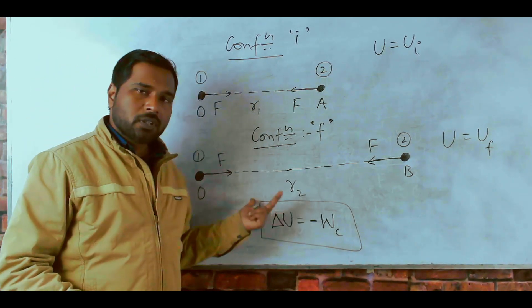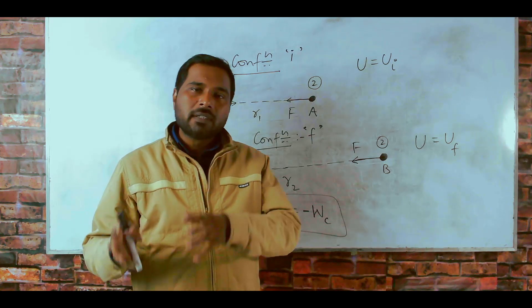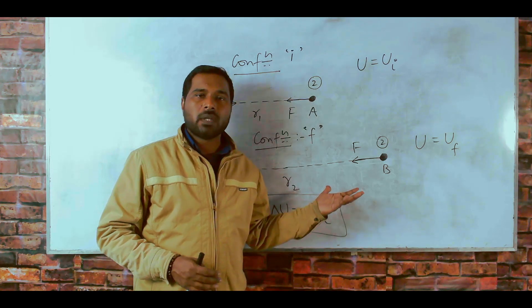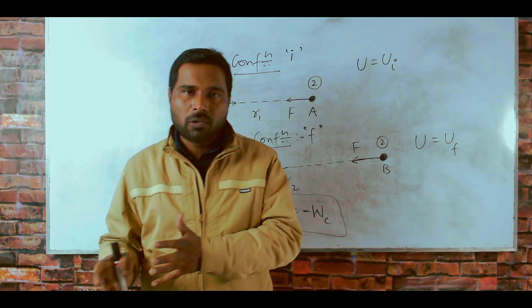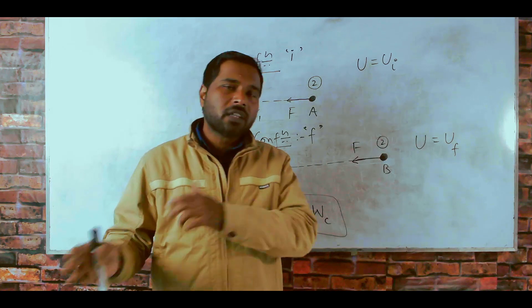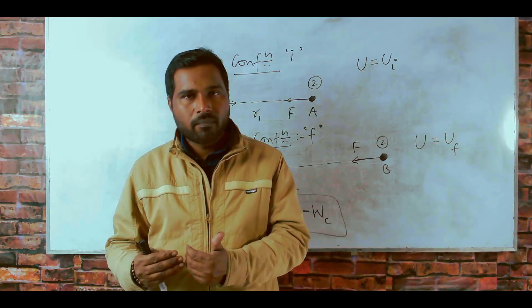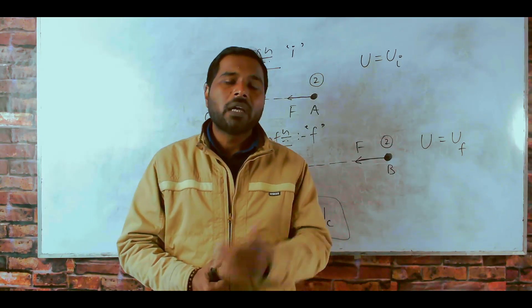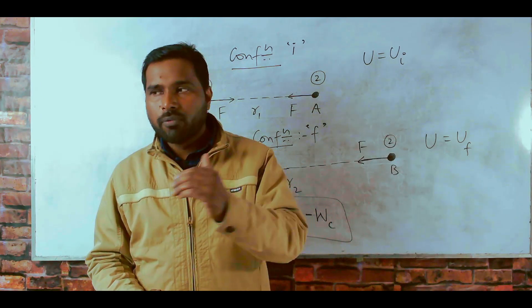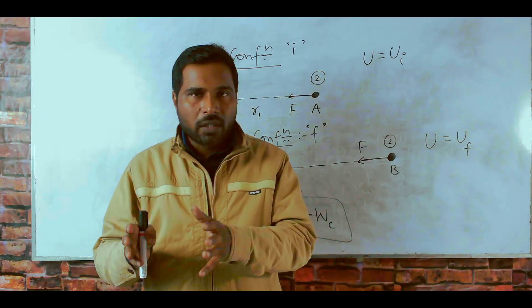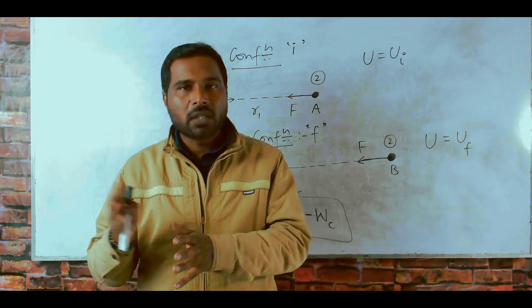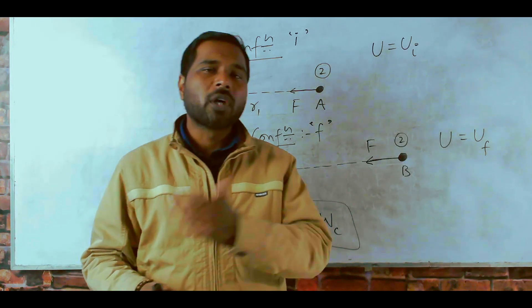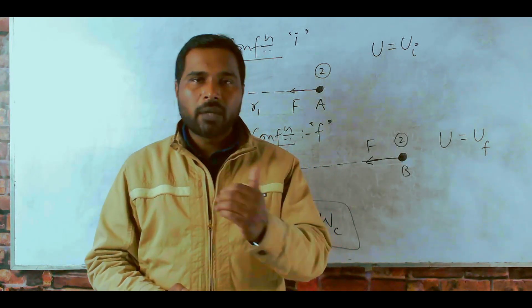The type of potential energy is named after the conservative force acting inside the system. If that conservative force is gravitational force, the potential energy is called gravitational potential energy. If it is electric force, it is called electric potential energy. If it is spring force, it is called spring potential energy or elastic potential energy. And if that force is magnetic force, the potential energy is called magnetic potential energy.